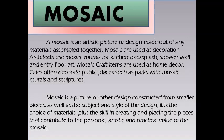Traditional mosaics are made of small, flat, roughly square pieces of stone or glass of different colors, known as tesserae. Some floor mosaics are made of small, rounded pieces of stone, called pebble mosaics. Mosaic work is also done with enameled glass and opaque stained glass. Modern mosaic art is made from any material in any size, ranging from carved stone and bottle caps to found objects and pieces of toast.